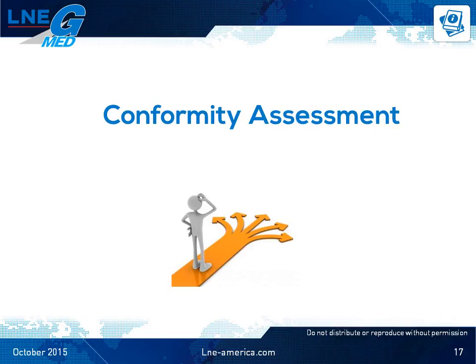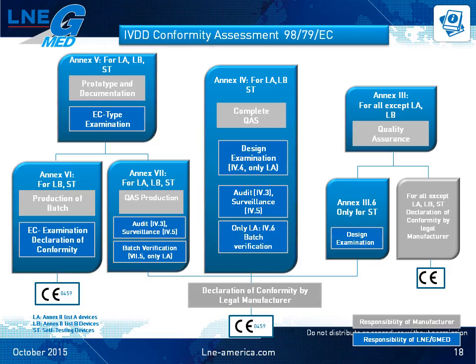Here is an overview of the current conformity assessment routes available to a manufacturer per Directive 98/79/EC. The major conformity assessment routes are Annex V, Annex IV, and Annex III.